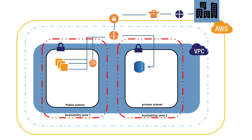A VPN connection consists of two tunnels for higher availability to the VPC. This is about VPN connection, and we have seen how the customer gateway and the virtual private gateway enable a direct connection between your customer data center and your AWS VPC.